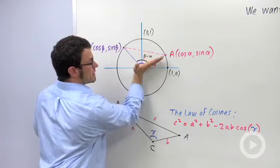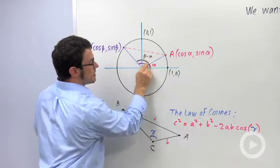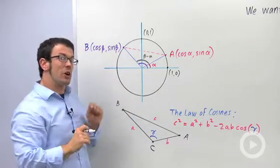This angle's beta, this is alpha. So this angle between the two is beta minus alpha. I want a cosine for that.